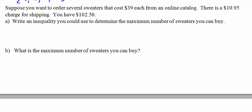So suppose you want to order several sweaters, cost $39 from the catalog, $10.95 charge for shipping, and you only have $102.50. Well, 39 times X plus that shipping charge, it better be less than or equal, it could actually equal it, $102.50. So now we would go backwards and just do a bunch of guessing and checking.